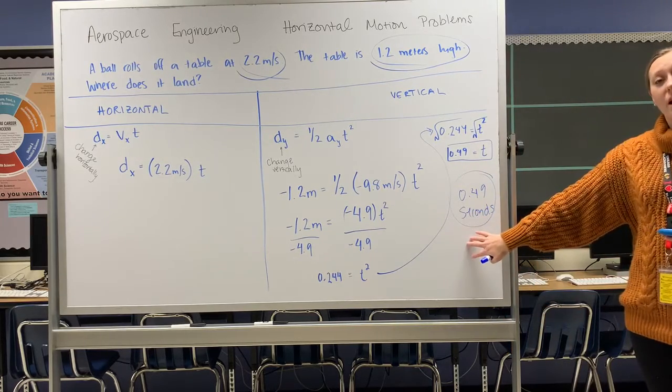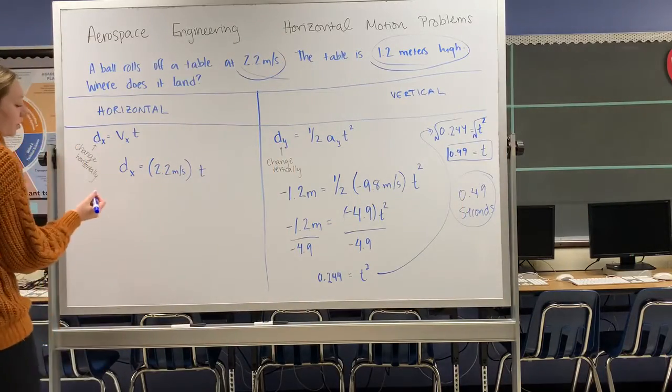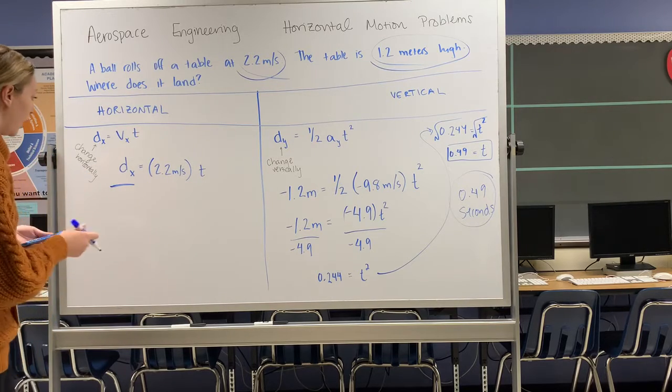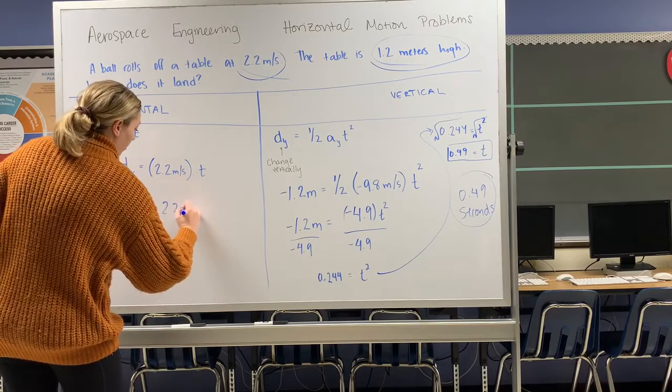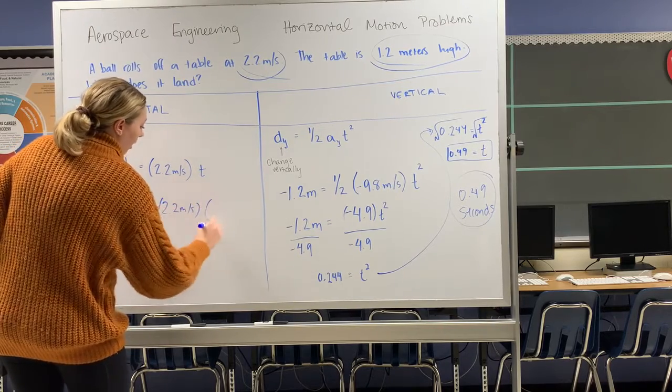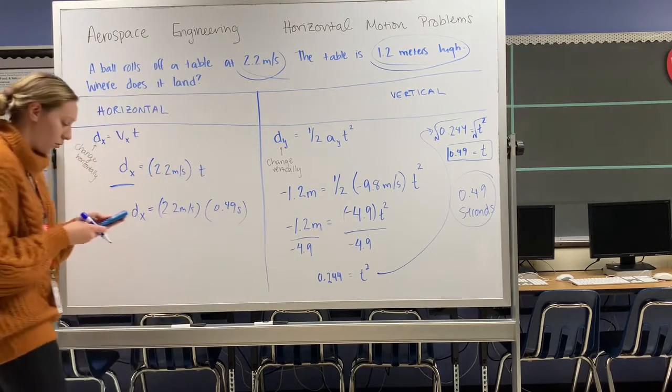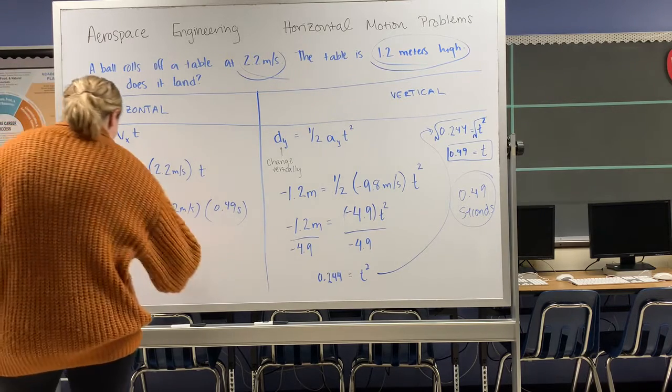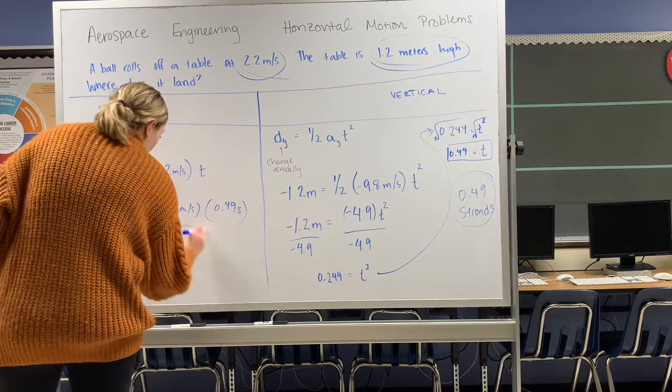What's really nice about the fact that I just solved for seconds is I can go back to my original equation. I still want to know where do I land on the ground. I can plug in the seconds I've now solved for. So I take my 2.2 meters per second and I'm going to multiply that by my 0.49 seconds that I just solved for. So 2.2 times 0.49, that is 1.078. I know that is meters.